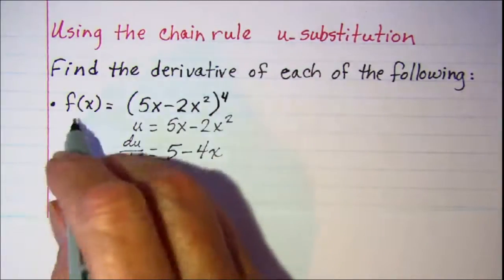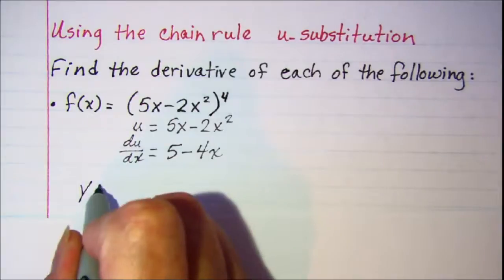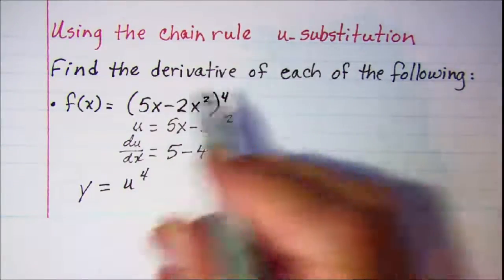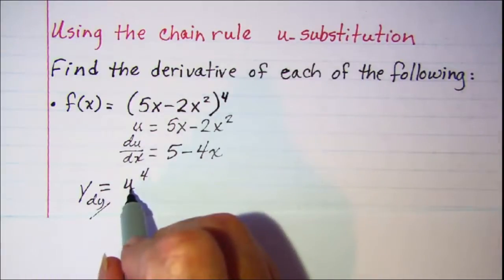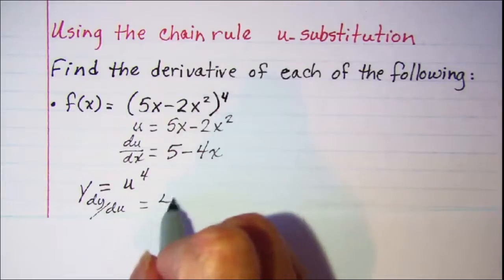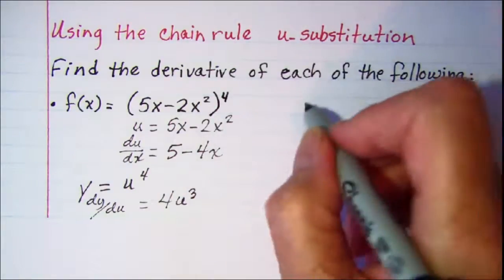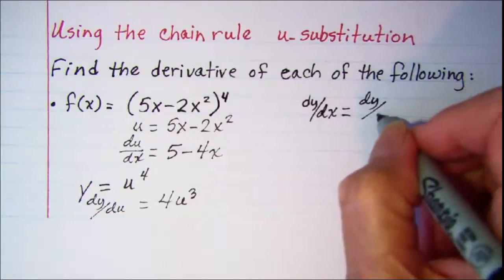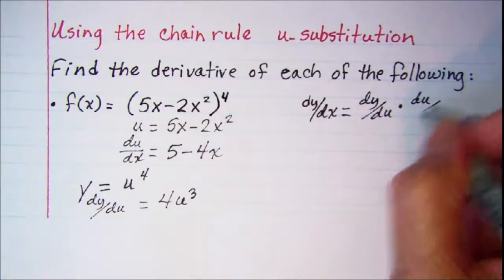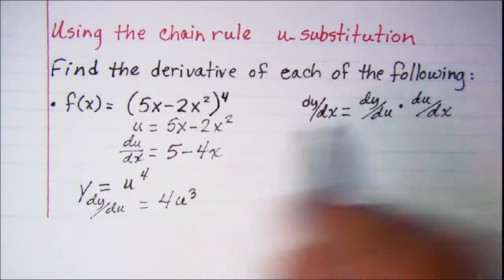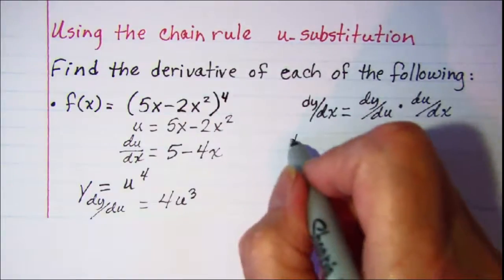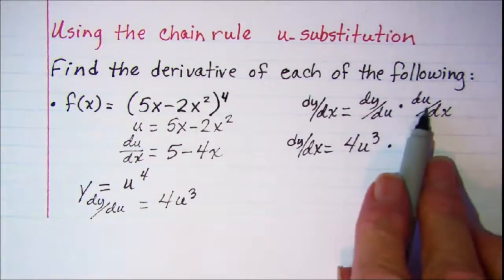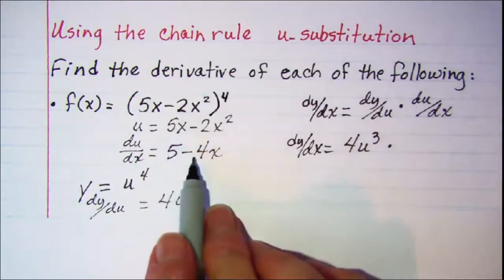the derivative of u is 5 minus 4x. We rewrite our function with u substituted in, so y equals u to the fourth power. Then dy/du is 4u to the third power. The chain rule says dy/dx equals dy/du multiplied by du/dx. So dy/du is 4u cubed, multiplied by du/dx which is 5 minus 4x.